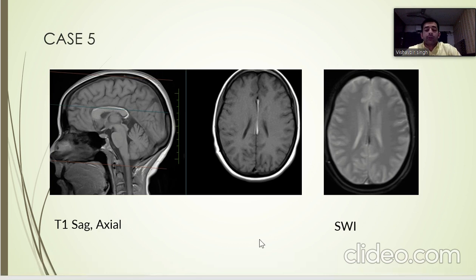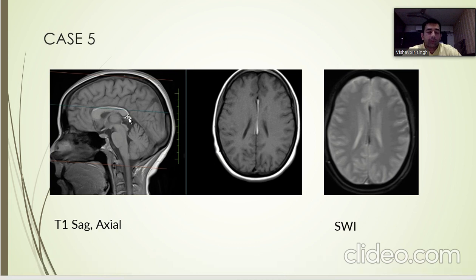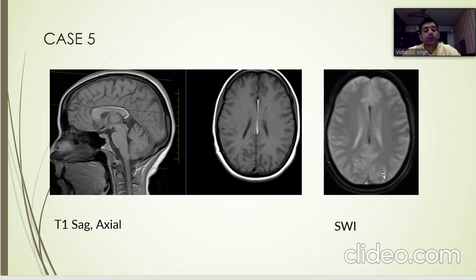In Case 5, we see another pericallosal linear hyperintensity which shows hyperintense signal on transverse section as well, and signal dropout on SWI images.